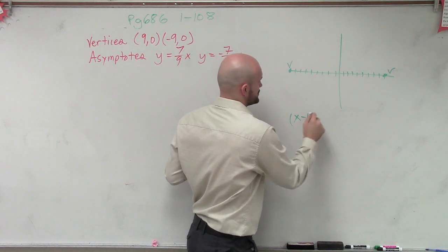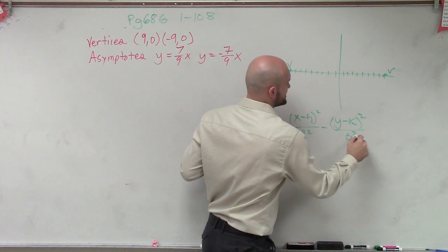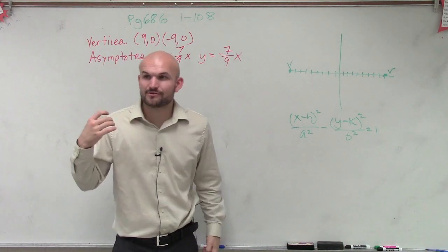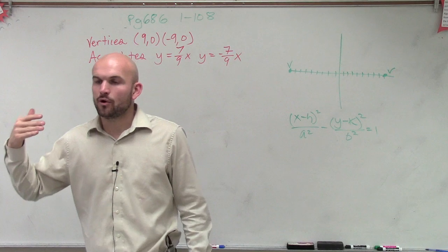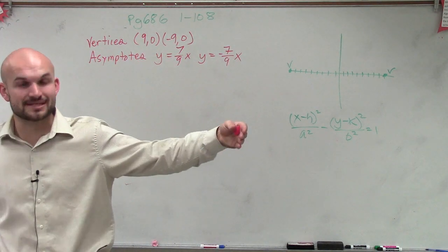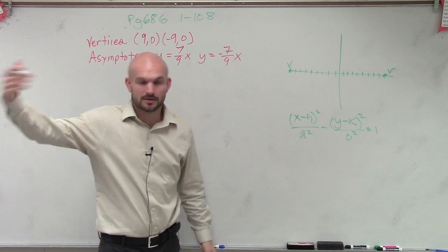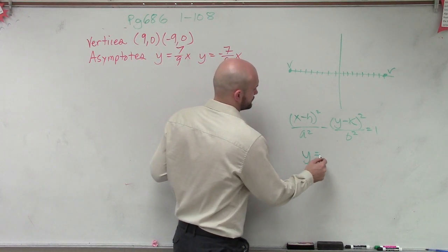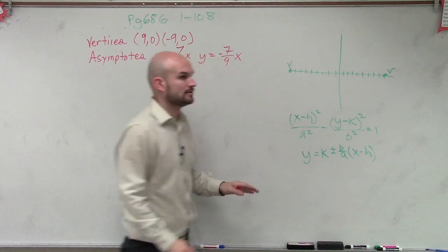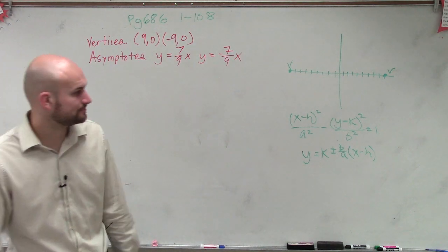Therefore, my formula is going to be (x minus h)² over a² minus (y minus k)² over b² equals 1. Now, they gave me the asymptotes. I also need to remember: what is the formula for a horizontal hyperbola for the asymptotes? The formula I gave you for asymptotes for a horizontal hyperbola is y equals k plus or minus b over a times (x minus h).